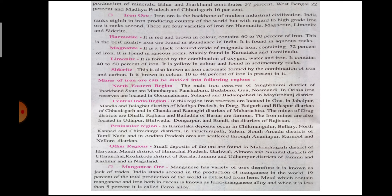In the peninsular region, iron ore deposits in Karnataka occur in Chikmagalur, Bellary, North Kanara and Chitradurg. The south peninsular states include Andhra Pradesh, Kerala, Karnataka and Tamil Nadu. Small deposits are found in Mahendragarh district of Haryana, Mandi district of Himachal Pradesh, Garhwal, Almora and Nainital districts of Uttarakhand, Kozhikode district of Kerala, and Jammu and Udhampur districts of Jammu and Kashmir, and in Nagaland.